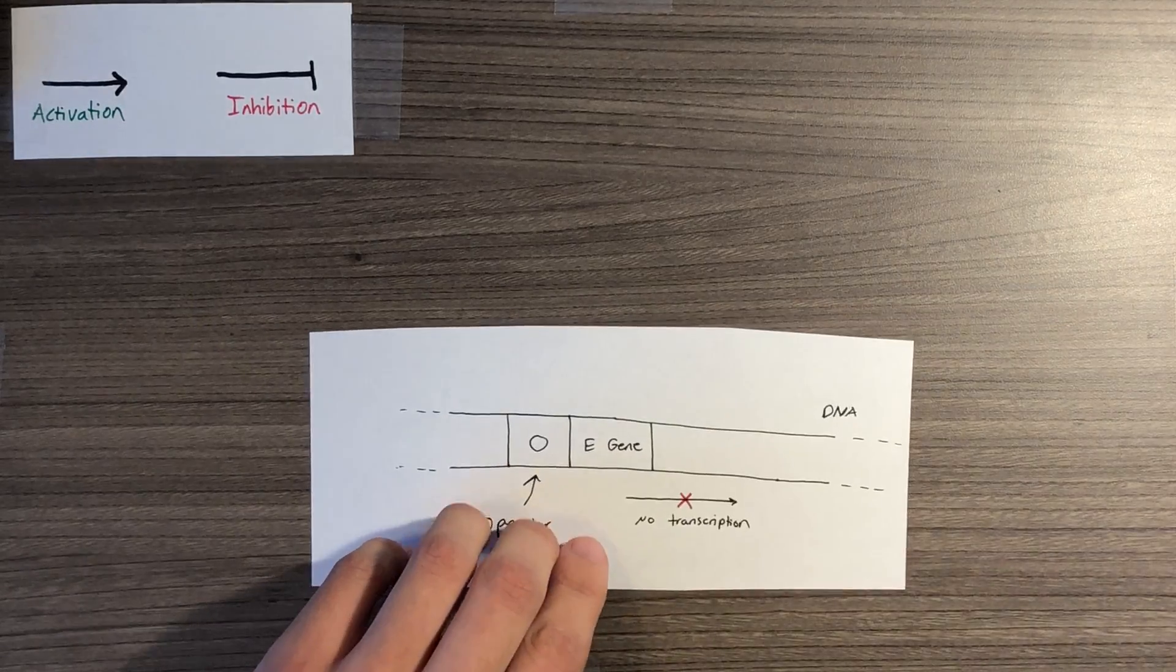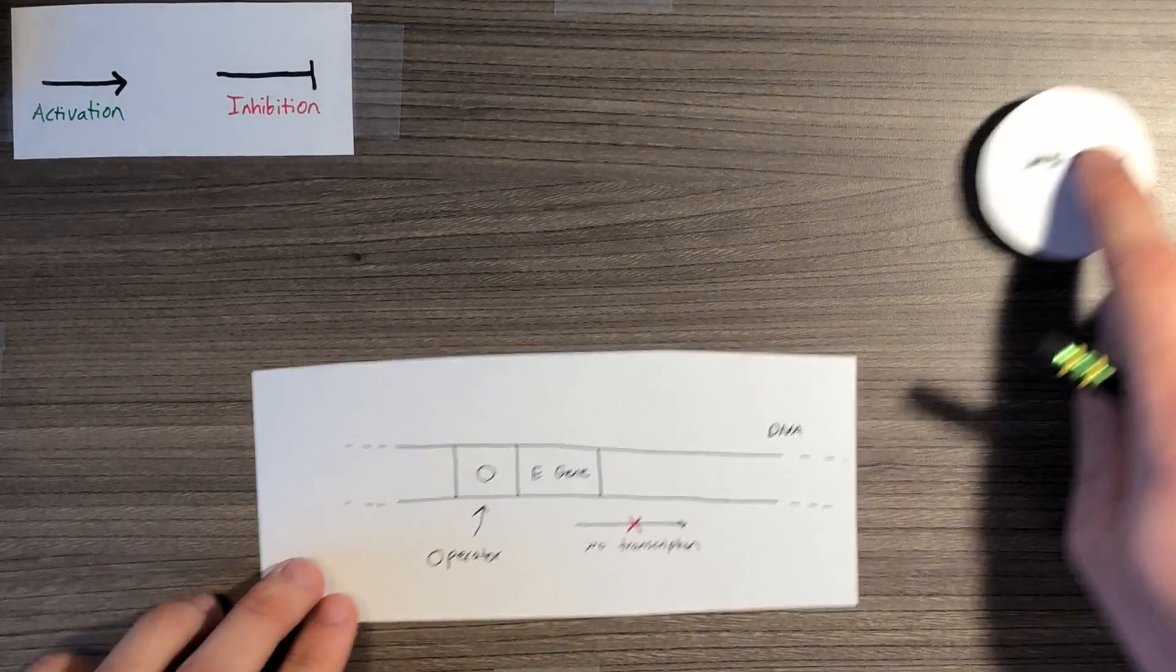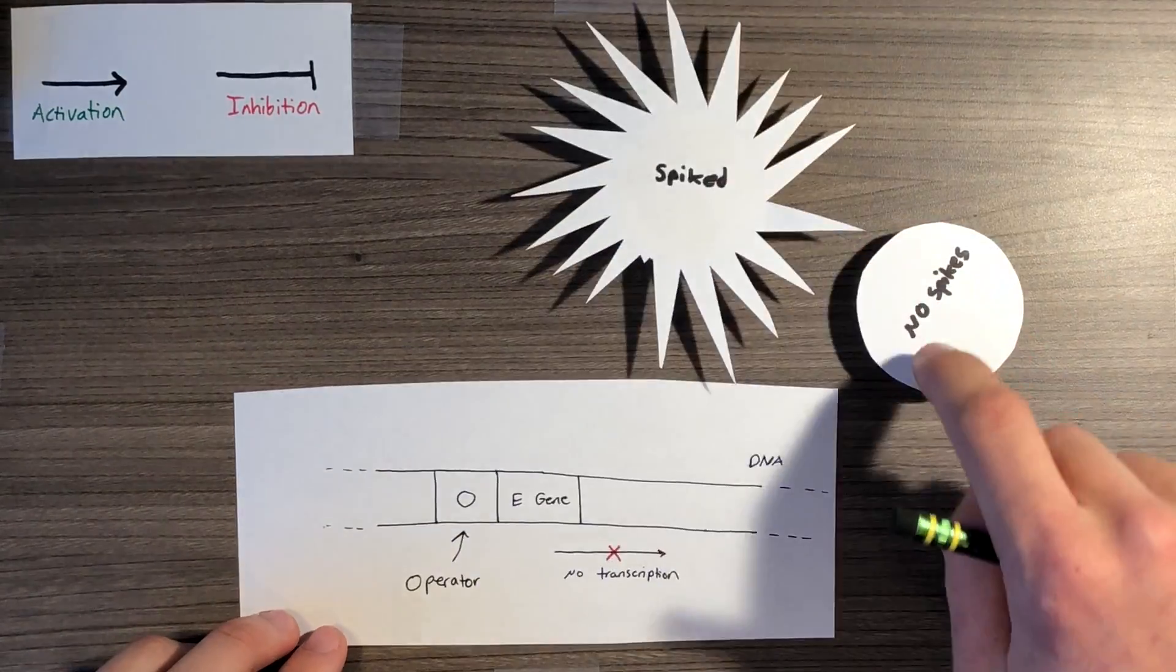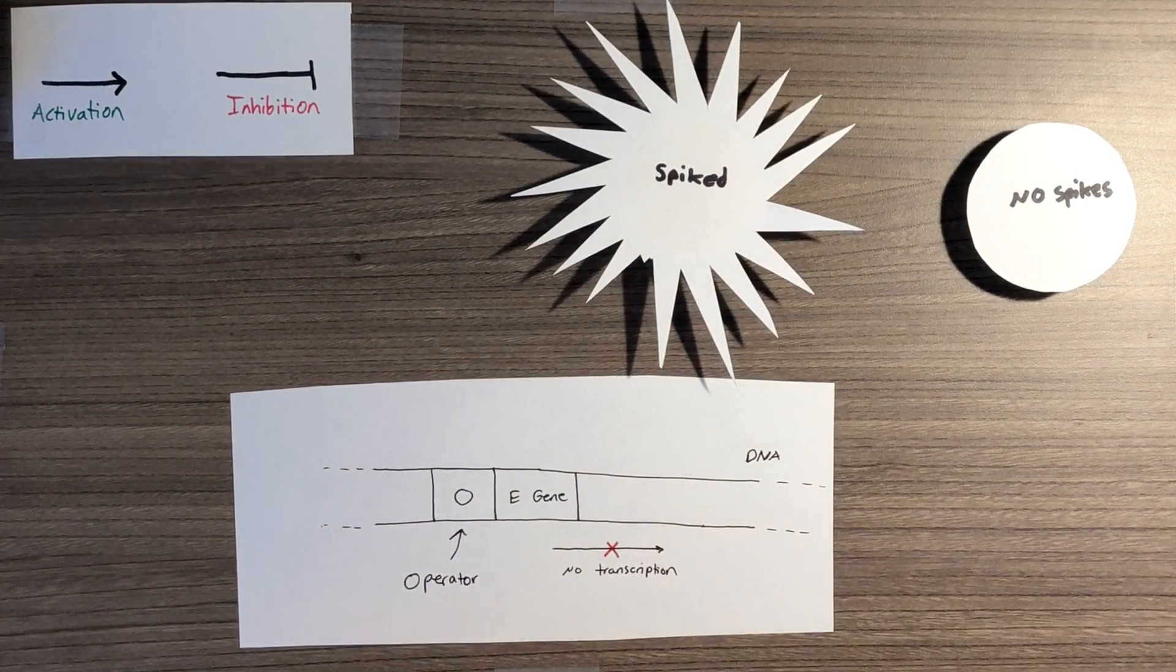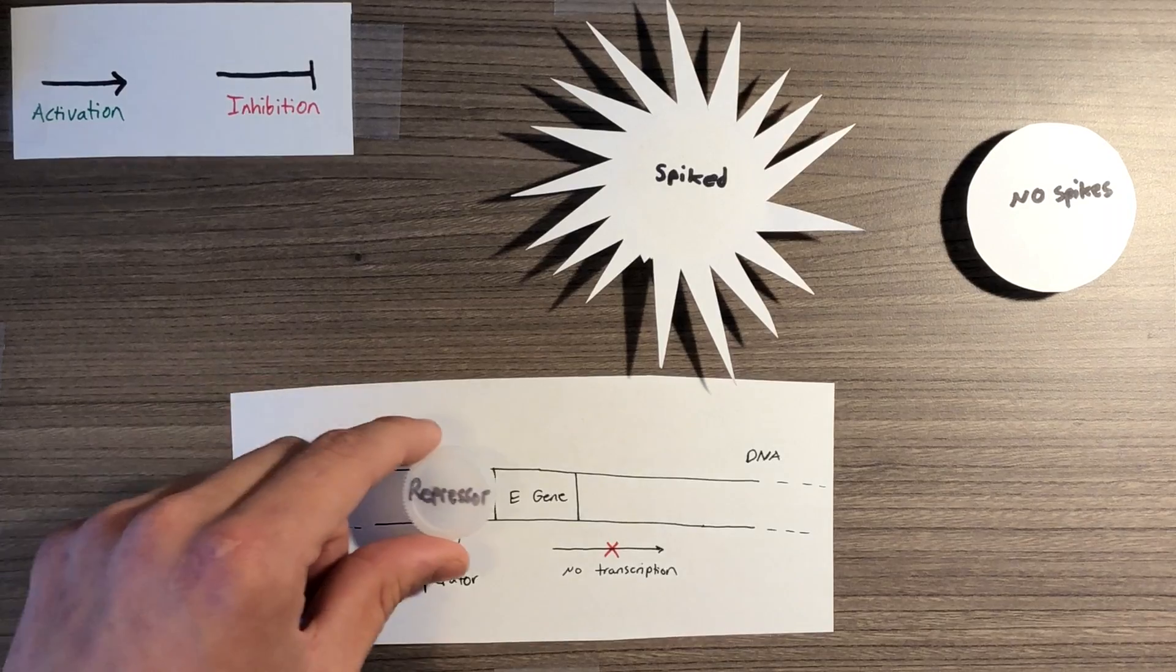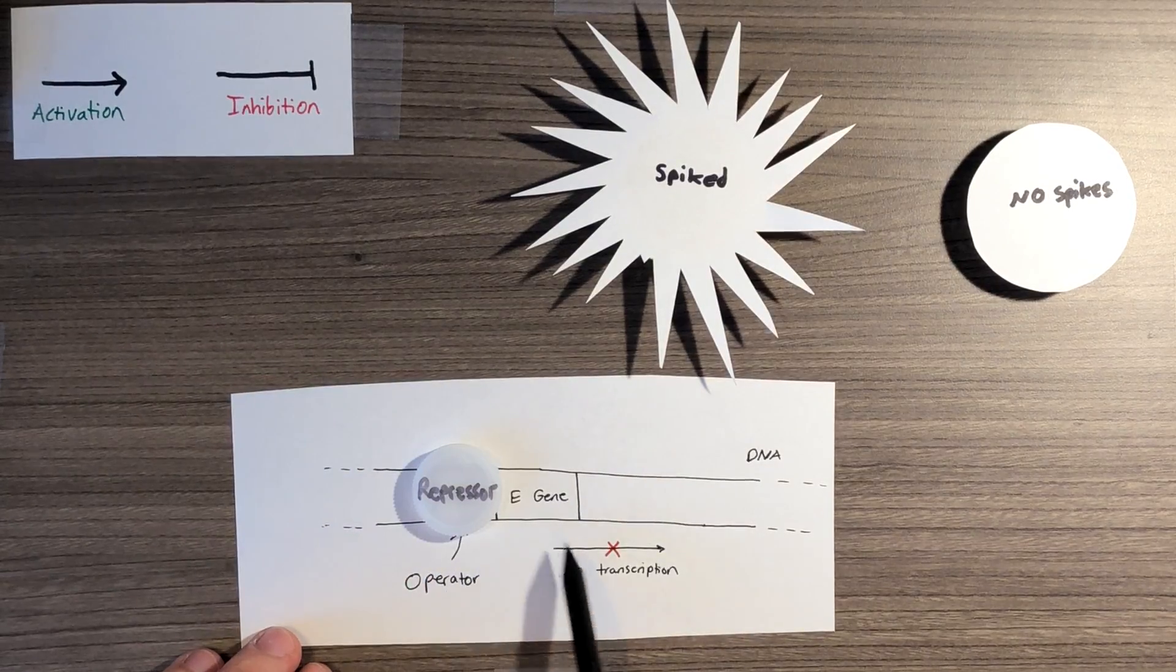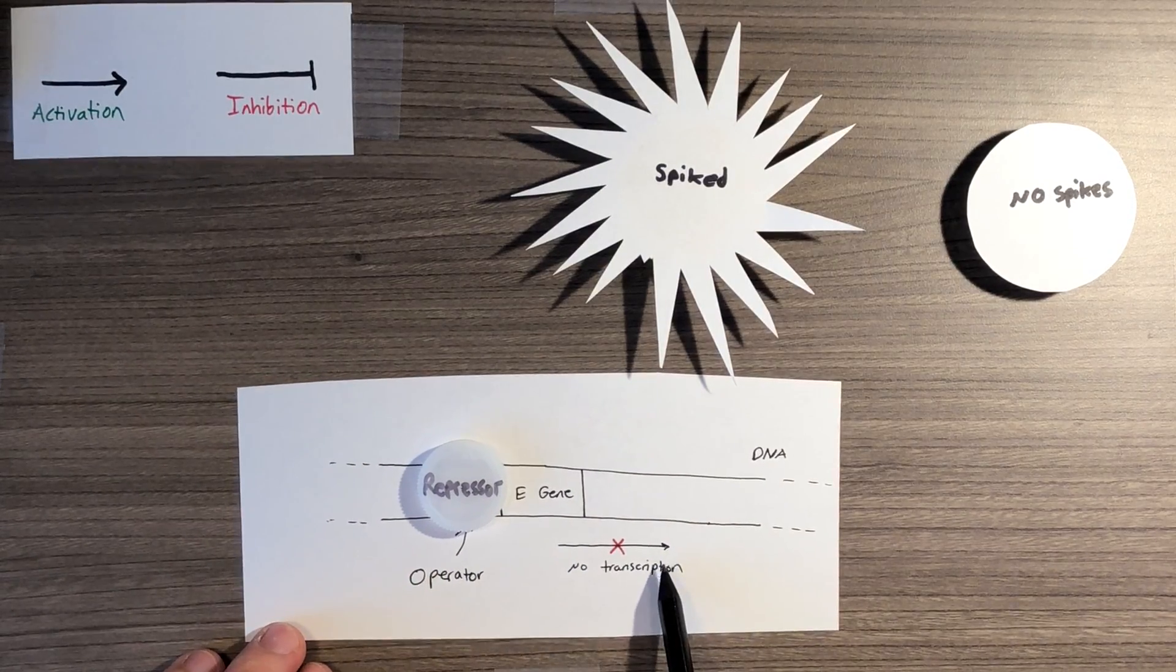Sometimes, skin cells of the thorny dragon may not have spikes, while some skin cells may have lots of spikes, even though the cells have the same genetic makeup. A way to possibly explain this occurrence is through transcription factor expression. One cell could have a repressor bound to the operator, which can prevent the expression of the E gene. This would prevent spikes from being produced.